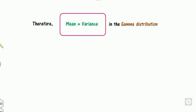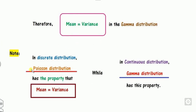Do you remember any distribution, either discrete or continuous, which satisfies this property of mean equal to variance? Yes, this is the Poisson distribution in the discrete case. While in continuous distributions, the standard gamma distribution has the same property. But remember, this is only for the standard gamma distribution, not for the two-parameter case.